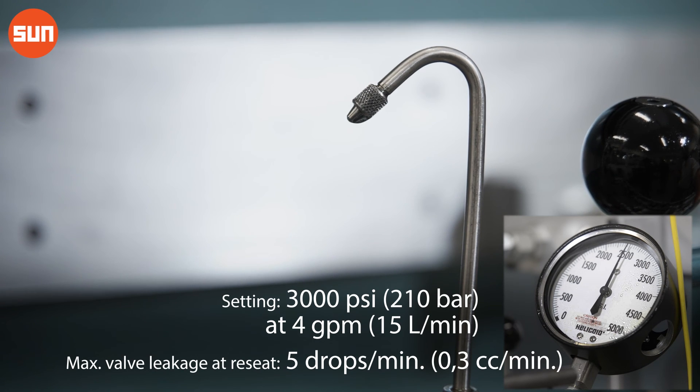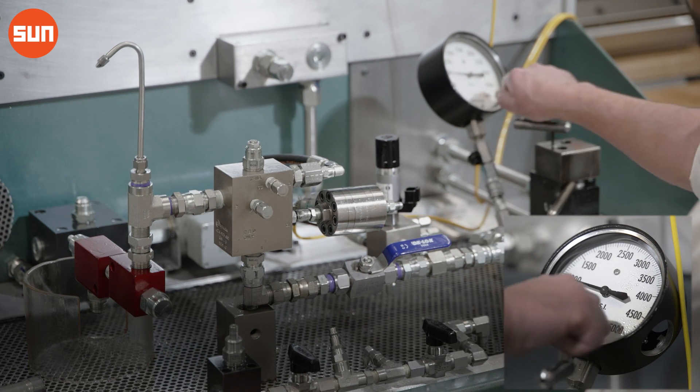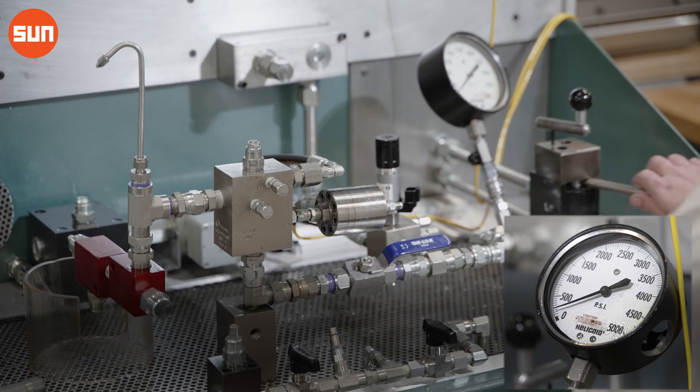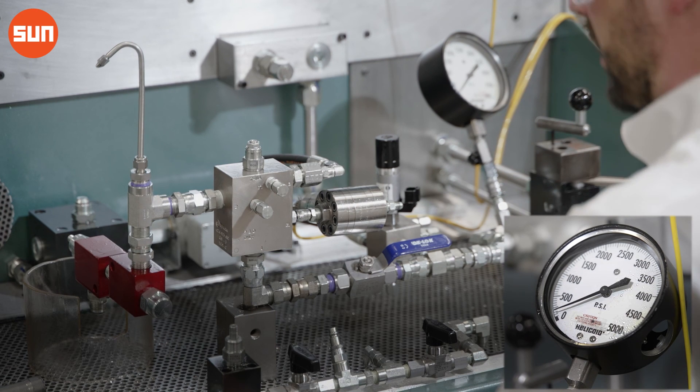Once we've verified that we have less than five drops a minute out of the p-tube, we can take our test stand pressure down to zero, shut the stand off, and our counterbalance valve is set.